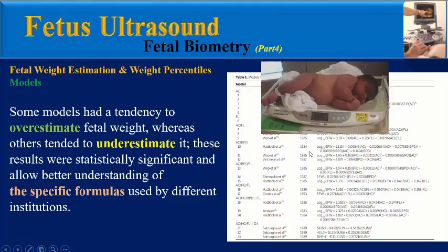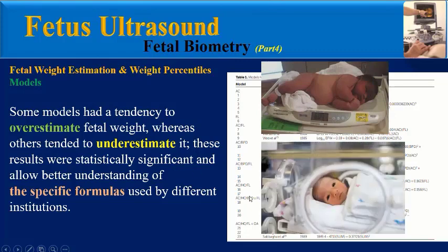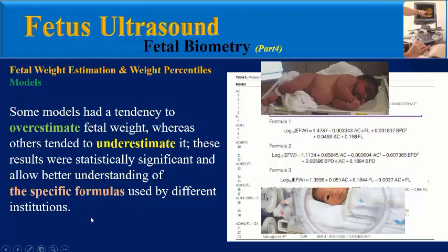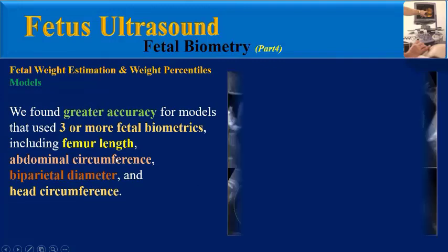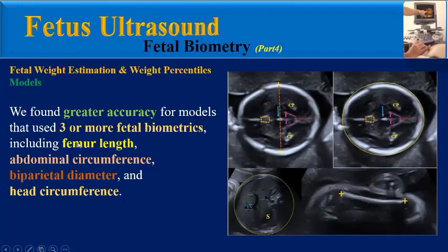For most models, 80% of sonographic fetal weight estimations predict within plus or minus 15% of birth weights. Some models had a tendency to overestimate fetal weight, whereas others tended to underestimate it. Greater accuracy was found for models that use three or more fetal biometrics, including femoral length, abdominal circumference, biparietal diameter, and head circumference.